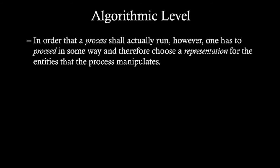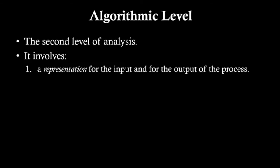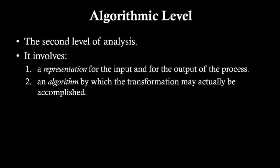To recap, this algorithmic level is the second level of analysis, and it's going to involve a representation for the input and output of the process, as well as an algorithm by which the transformation may be accomplished. Those are the two main pillars of level 2.